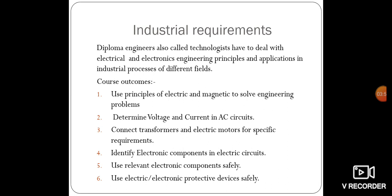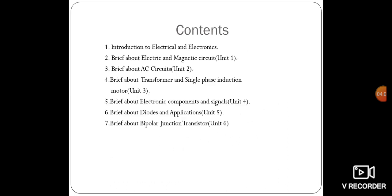We will also understand electrical and electronic protective devices. There are different types of protective devices like MCBs and circuit breakers — all these we will understand in detail. The contents of this presentation are: introduction to electrical and electronics, Unit 1 electric and magnetic circuits, Unit 2 AC circuits, Unit 3 transformer and single phase induction motor, Unit 4 electronic components and signals, Unit 5 diodes and applications, Unit 6 bipolar junction transistors.